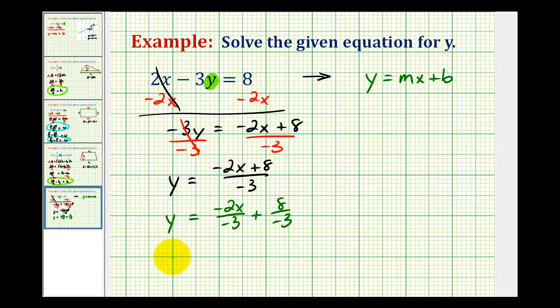So to simplify this, we would have Y equals, and negative divided by a negative is positive, so this would be positive two-thirds X. And then instead of plus a negative eight-thirds, we can just say minus a positive eight-thirds. This would be the more common form.